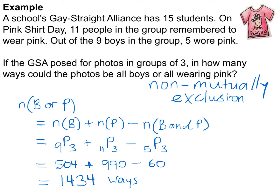The reason we subtract the 5P3 (those 60 arrangements) is that some of the all-boys groups are also all wearing pink. Similarly, some of the 990 all-pink groups are also all boys. We have to make sure we don't double count. When events are non-mutually exclusive, we subtract the intersection — where both events happen simultaneously.